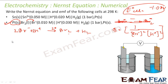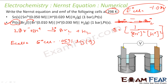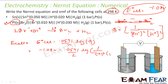Applying the Nernst equation at 298 K: E_cell = E°_cell − (0.0591/n) × log Q. E°_cell = −1.08 V, n = 2 electrons, and log Q = log(1 / ([Br⁻]² × [H⁺]²)) with [Br⁻] = 0.01 and [H⁺] = 0.03. Solving: −1.08 − 0.21 = −1.29 V. That is the final answer.